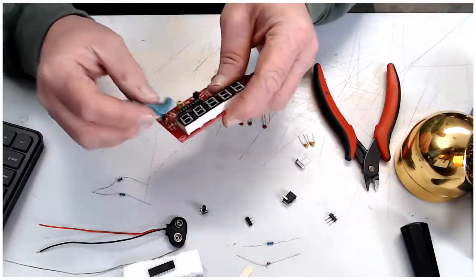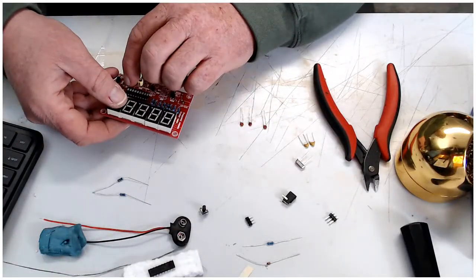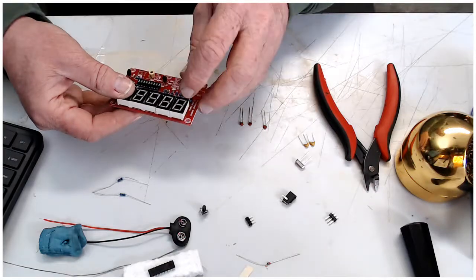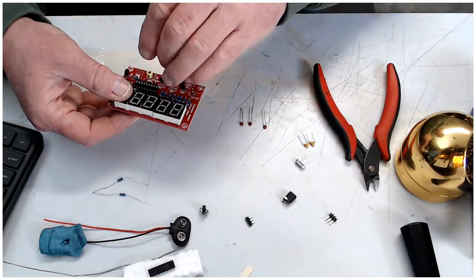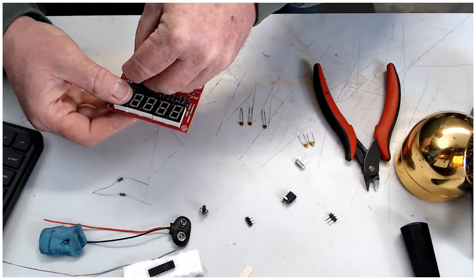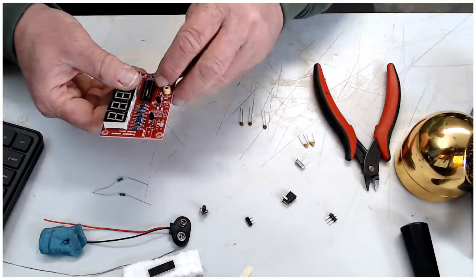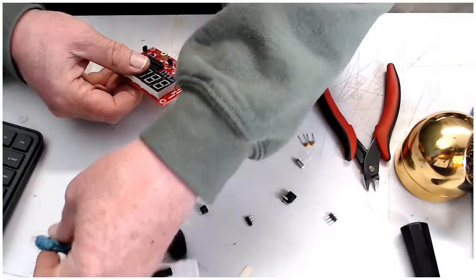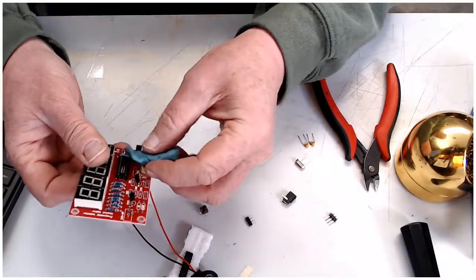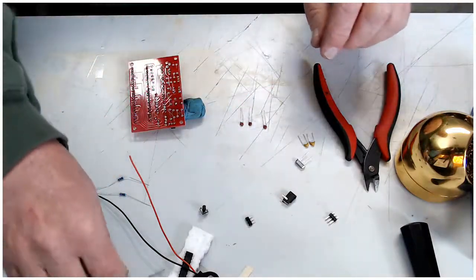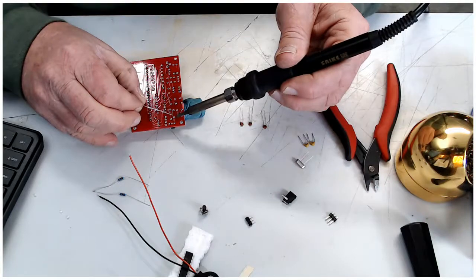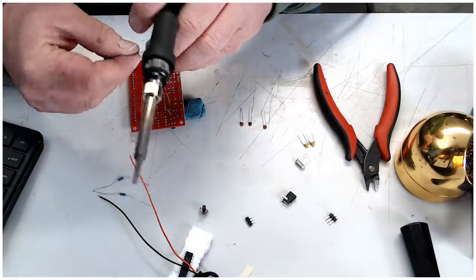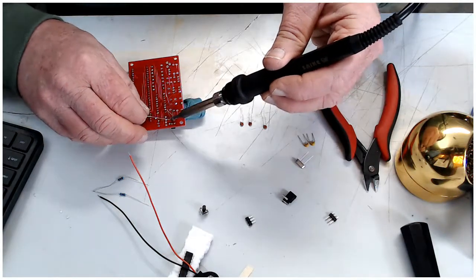All right, where are we at here? We got another 10K down here, which is this one, and another diode. Let me put those in. I don't like to populate too many things on the board and then try to solder it because it just creates a mess. I try to make the circuit board as clean looking as possible. It's easier to troubleshoot that way too. You're not looking at a soldering nightmare.